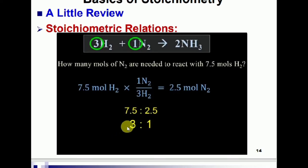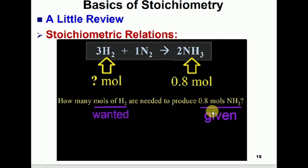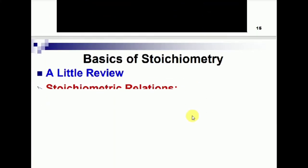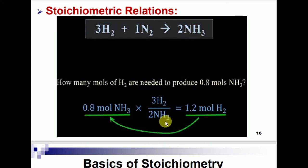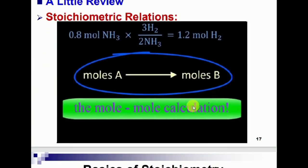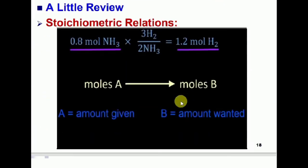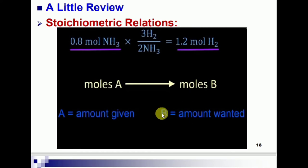In the second example, moles of hydrogen is wanted and 0.8 moles of NH3 is given. The given amount always goes in the numerator. When 3 moles of hydrogen react with 1 mole of nitrogen, it gives 2 moles of ammonia. Using the stoichiometric relation, multiply by the given amount of 0.8 moles NH3: the result is 1.2 moles of hydrogen by the mole-mole relationship. In summary, moles of A is given and moles of B is found easily through mole-mole calculation.